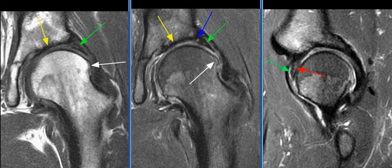The findings are consistent with developmental dysplasia of the hip, with hypertrophic labrum.